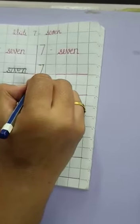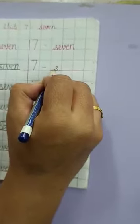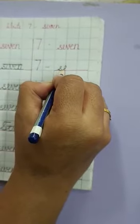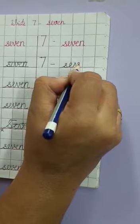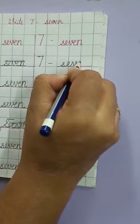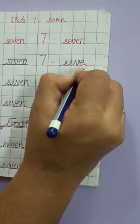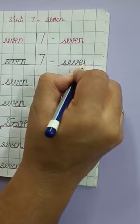See how to write it. S comes first. Along with it E should go. E finishes where V starts from. V's tail comes down. Along with it E should be written like this. Then E finishes where N starts from.